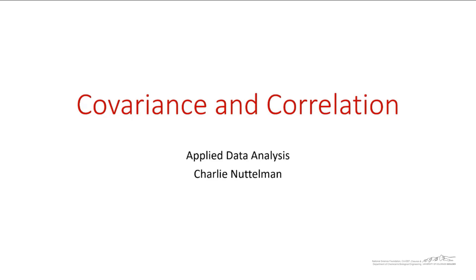We are now going to start talking about bivariate data, where you're collecting two different measurements or paired data. Up to now we've just been collecting samples of univariate data where we had measurements and fit that to a histogram, a probability distribution, and so on. In this screencast we're going to be talking about covariance and correlation, which are important in analyzing bivariate data.